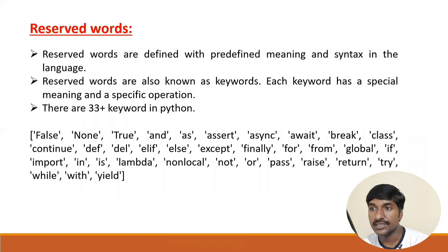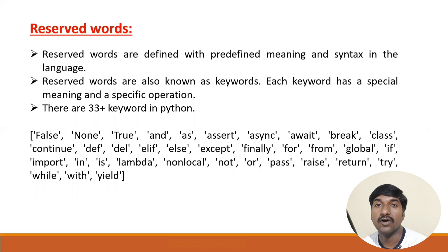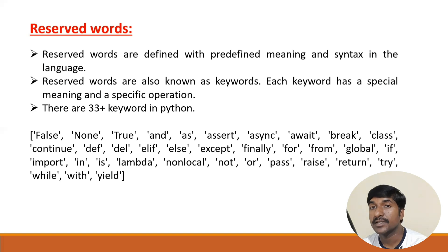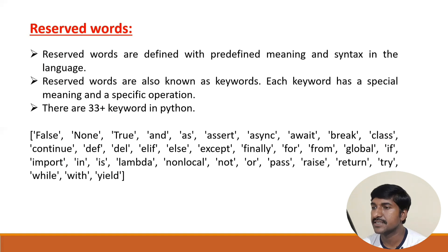In today's session we are going to cover what reserved words are in Python. Reserved words are nothing but words that already have a defined meaning — they are also called keywords. In Python, as in any programming language, there are some reserved words or keywords available. For C programming language there are 32 keywords, and similarly for Python programming language there are around 33 or more keywords available.